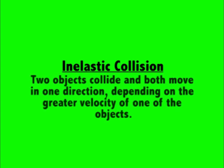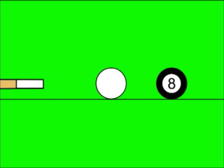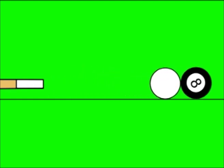An inelastic collision is completely different. Inelastic collisions occur when two objects collide and both move in one direction, depending on the greater velocity of one of the objects. In this case, the white ball and black pool ball will go in the original direction of the white ball.